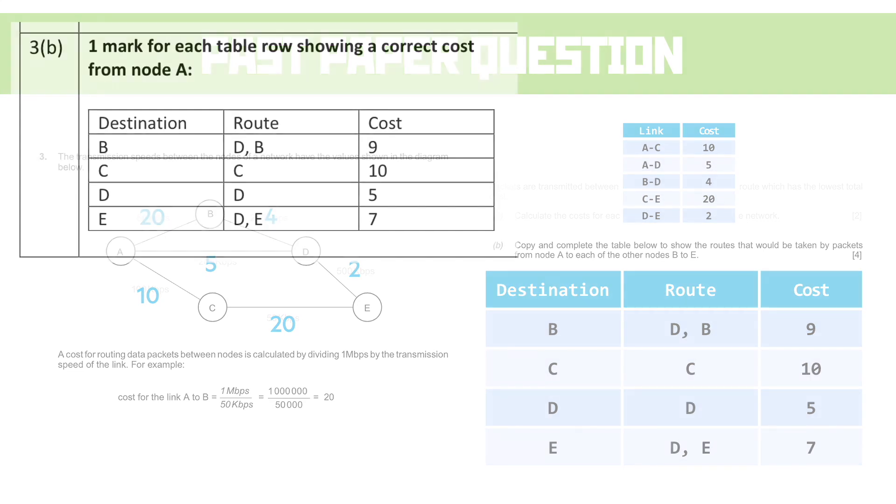Now let's have a look at what that looks like in the mark scheme, it's identical. One mark for each table row, showing the correct cost. So we're looking at a mark per row there, which is reasonably straightforward.